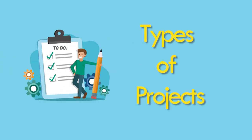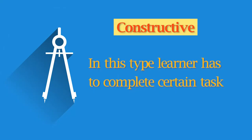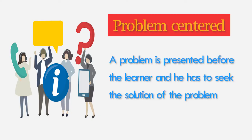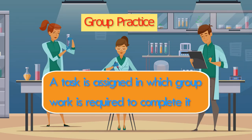Kilpatrick has classified projects into four types. First is constructive — the learner has to complete a certain task. Second is artistic — this type develops the aesthetic taste of the learner. Third is problem-centered — a problem is presented and the learner finds a solution. Fourth is group practice project — a task is assigned that requires group work to complete.